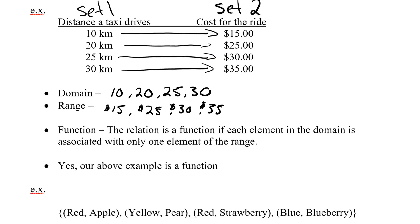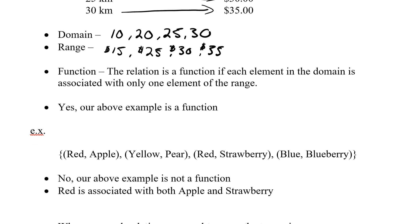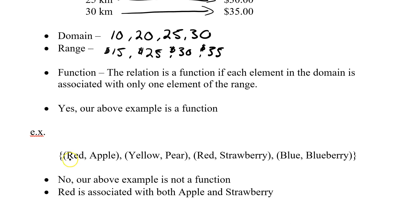Let's look at a second example. Red and apple, yellow, pear, red, strawberry, blue, blueberry. Let's think back here a little bit. How can we explain this in words? We could simply call it fruit color. The apple is red, the pear is yellow, strawberry is red, and blueberry is blue.